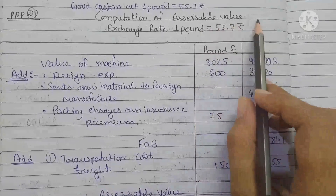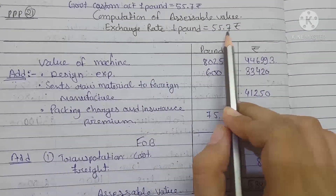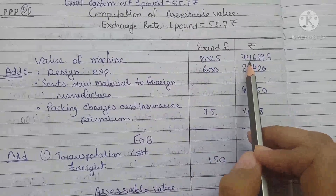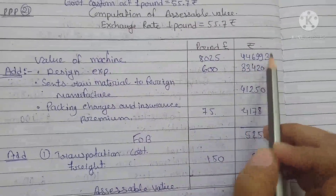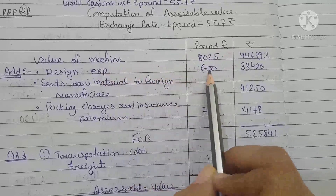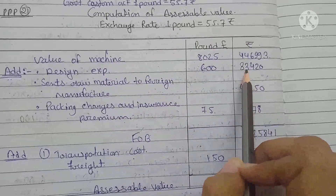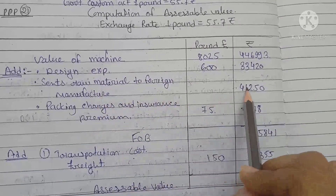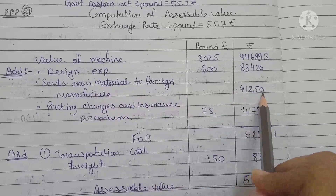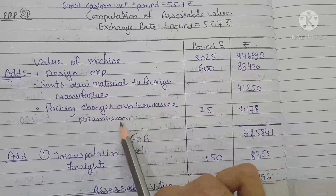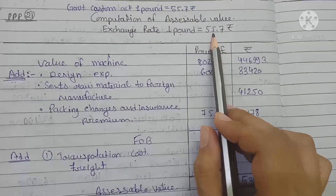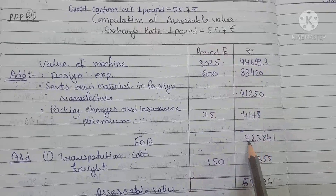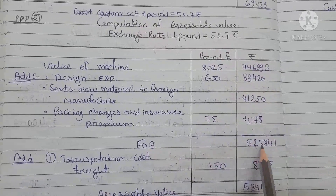Computation of assessable value: Exchange rate $1 = ₹55.7. Value of machine $8,025 into ₹55.7 = ₹4,46,993. Add designing expense $600 into ₹55.7 = ₹33,420. Raw materials sent to foreign manufacturer in direct rupee terms = ₹41,250. Packaging charges and insurance premium $75 into ₹55.7 = ₹4,178. This gives FOB value of ₹5,25,841.